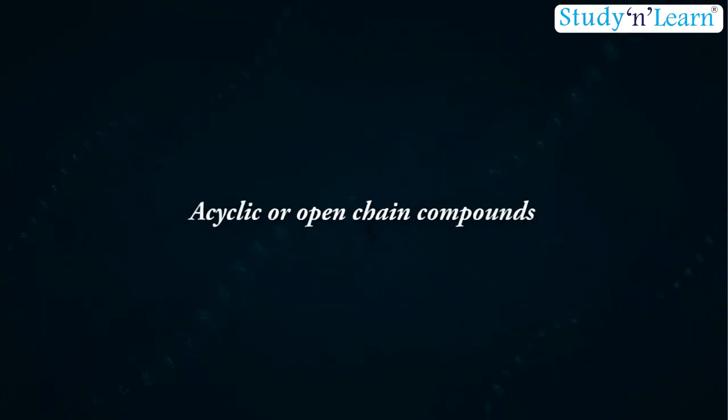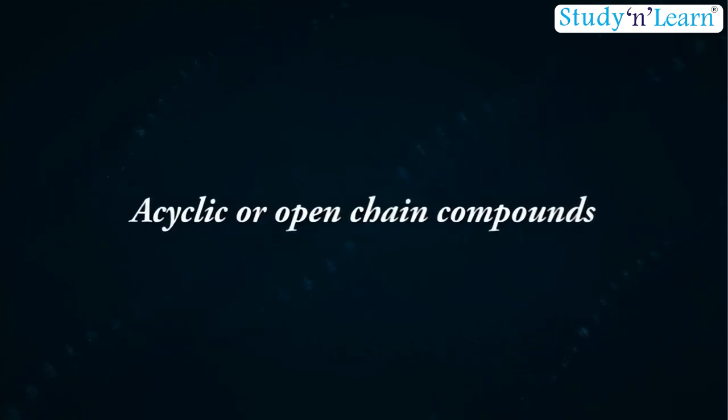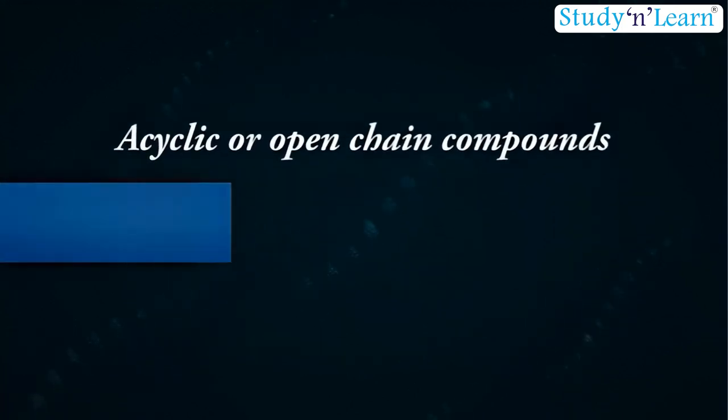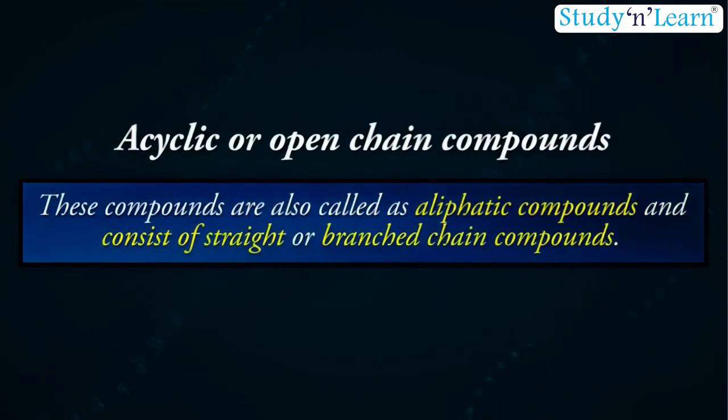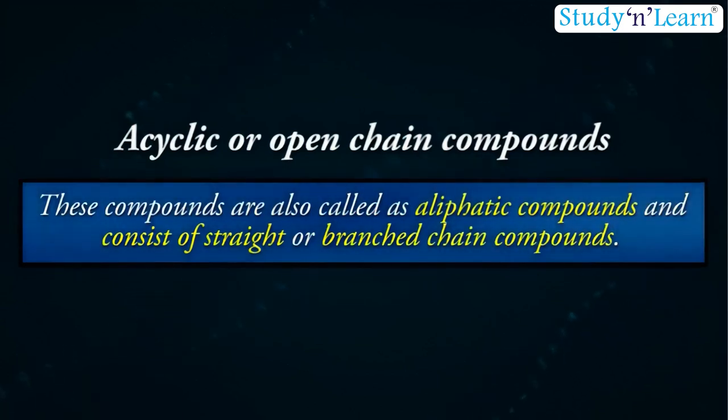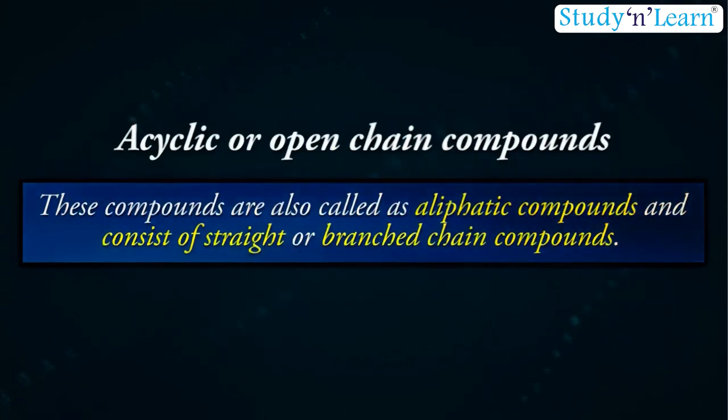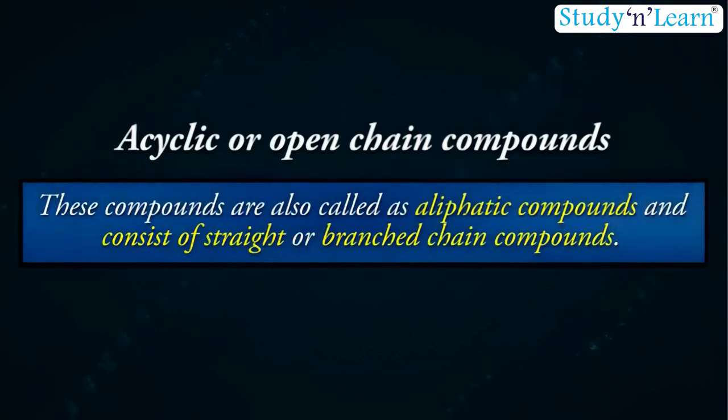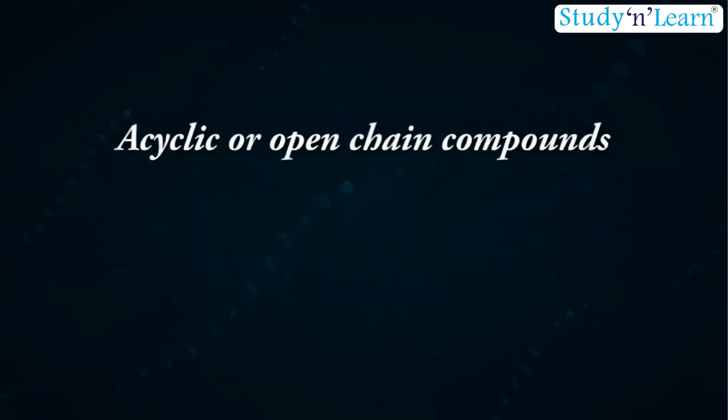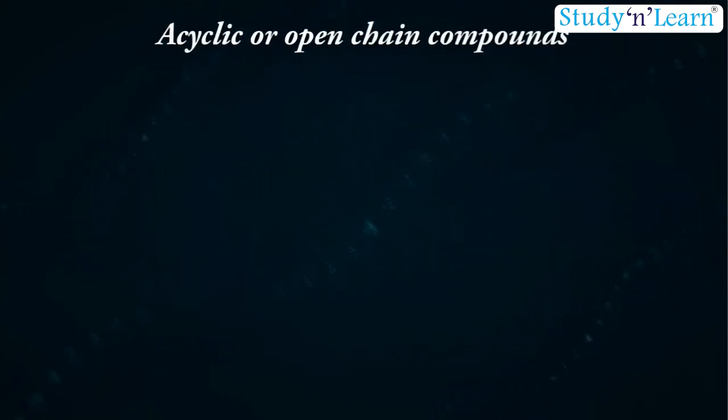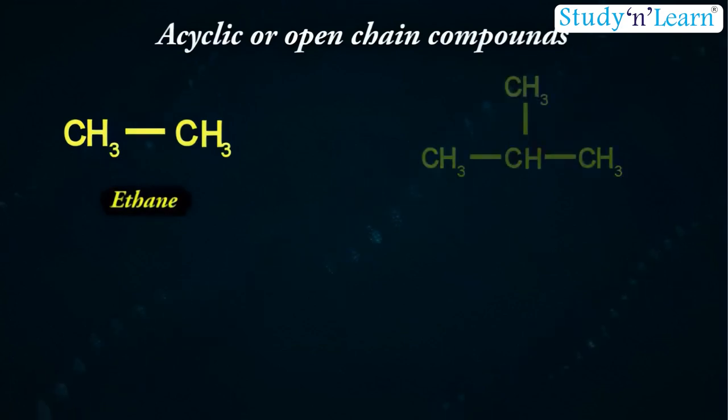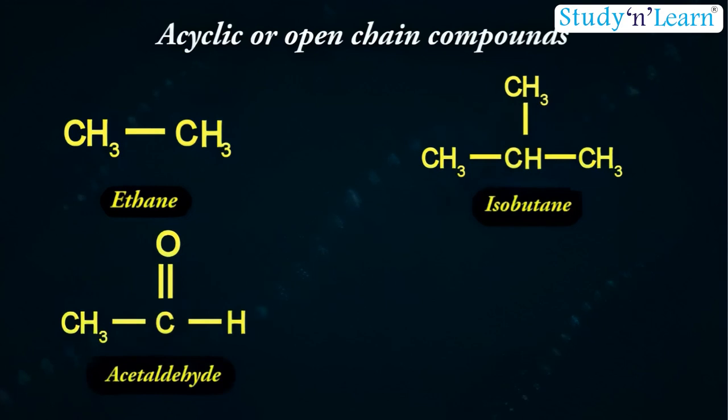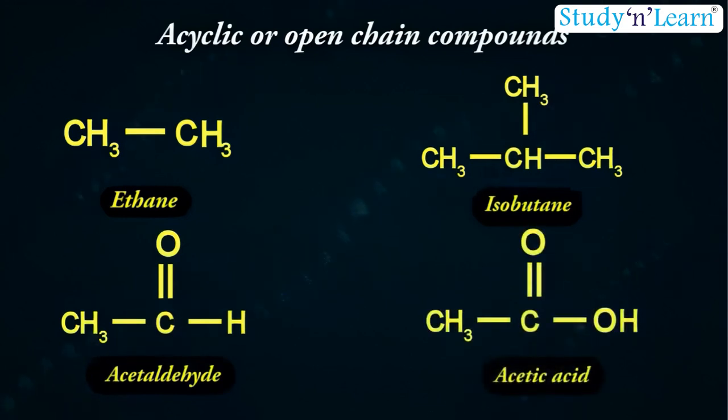First of all, let us see acyclic or open-chain compounds. Acyclic or open-chain compounds are also called aliphatic compounds and consist of straight or branched-chain compounds. For example, ethane, isobutane, acetaldehyde and acetic acid.